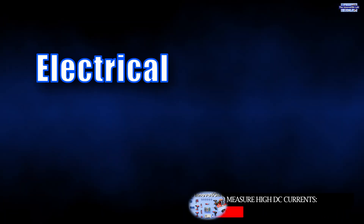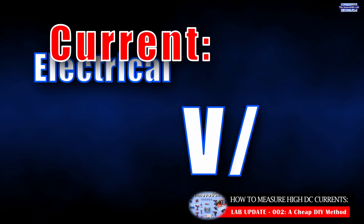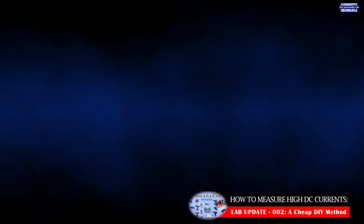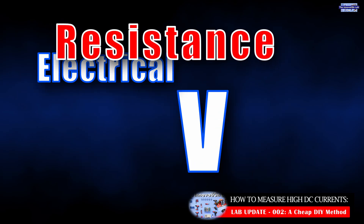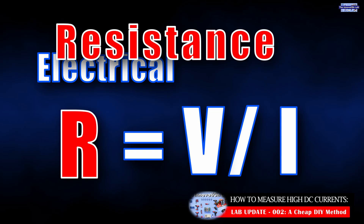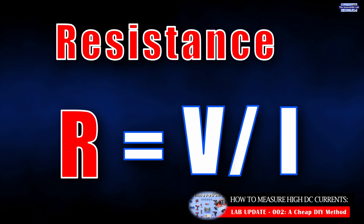Having this equation in mind, if you're looking for the current through a conductor and you know the voltage across it and its resistance, you can find the current by dividing the voltage by the resistance. The same applies to resistance — if you know the voltage across the conductor and the current going through it, you can find the resistance by dividing the voltage by the current you have measured.